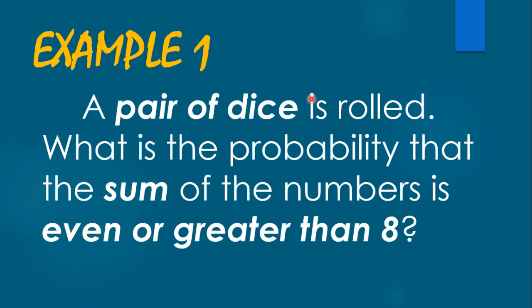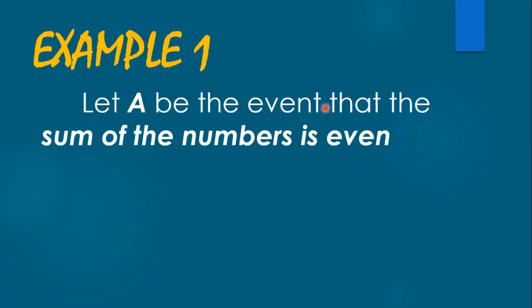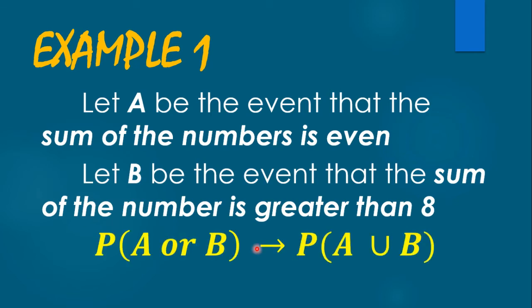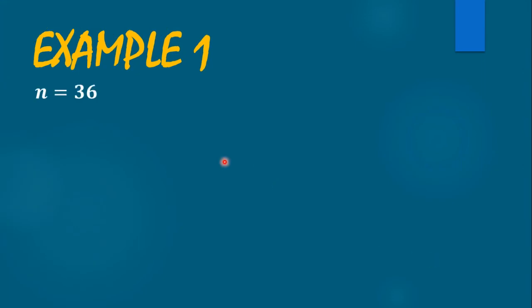Example number one: A pair of dice is rolled. What is the probability that the sum of the numbers is even or greater than eight? Since we have the word 'or,' we are talking about the probability of A union B. Let A be the event that the sum is even, and let B be the event that the sum is greater than eight. Rolling two dice gives us 36 outcomes.